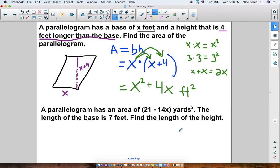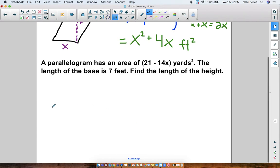Let's do the last one together. A parallelogram has an area of 21 minus 14x yards squared. The length of the base is 7 feet. Find the length of the height. So I don't have a picture yet, so I best draw one. What do I know? I know that the base is 7 feet, so this is 7 down here. I know that the whole area is 21 minus 14x. I do not know the height. That's what I'm trying to figure out. So my height, if I were to draw a line up, that's what I'm trying to figure out. I don't know the height.